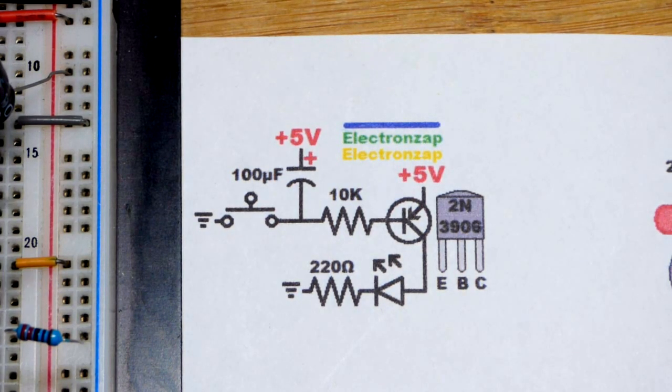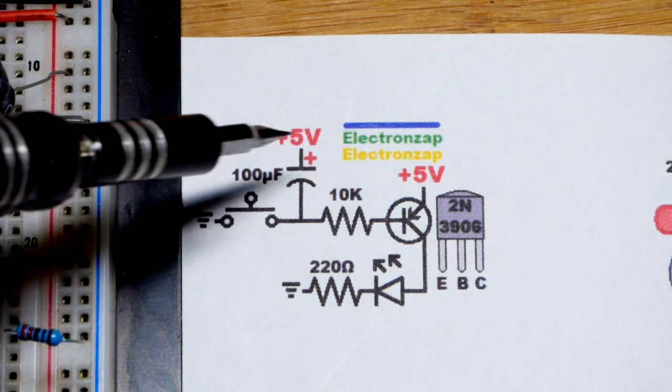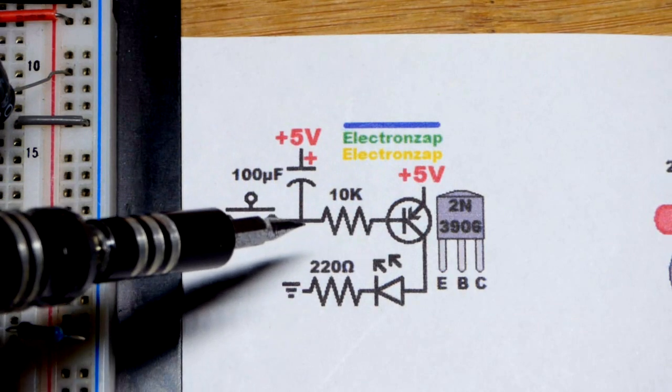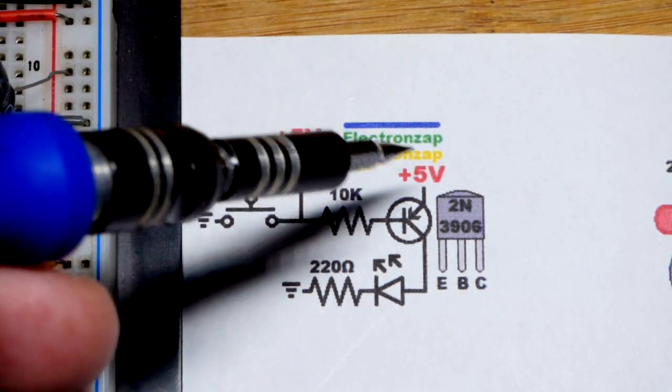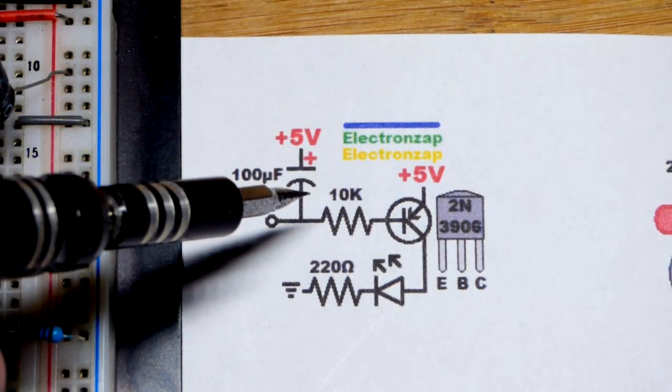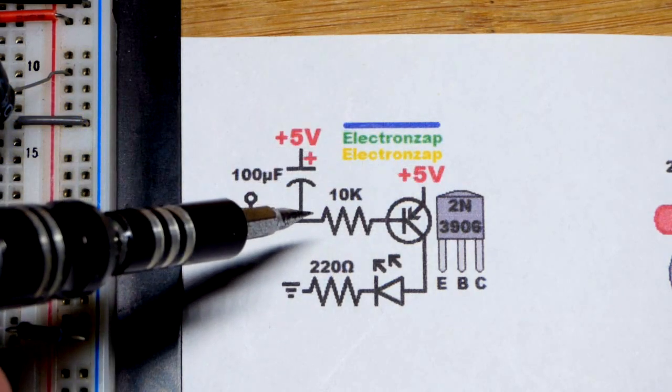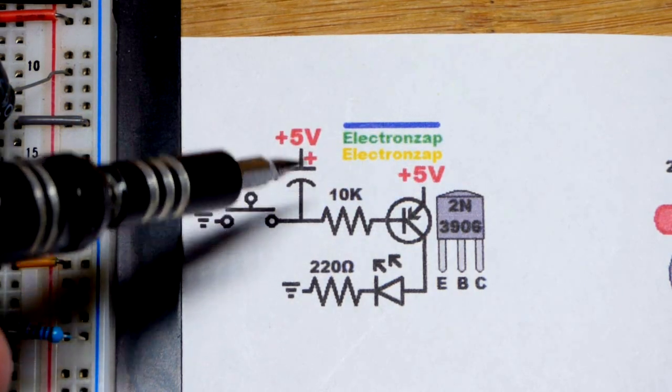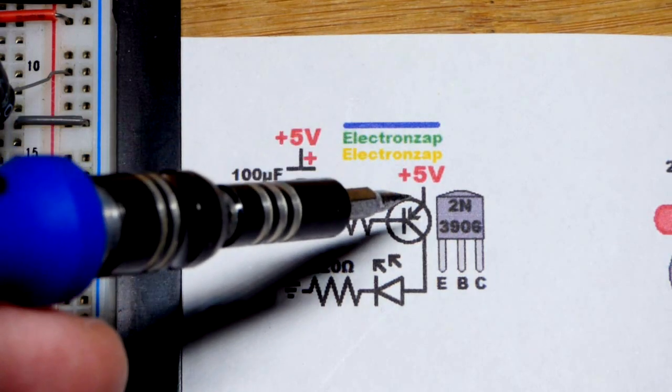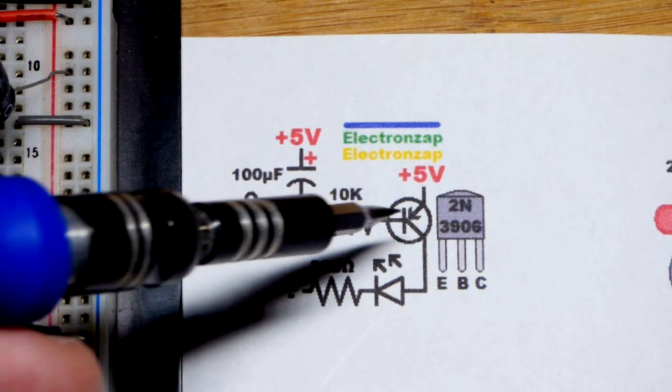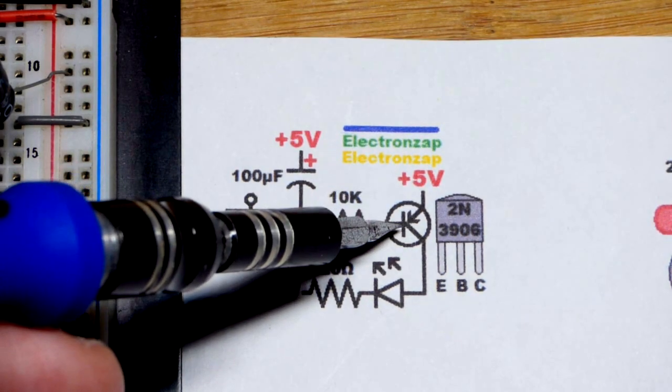When you release the switch, you can see that we have a path through the transistor. The capacitor starts discharging, so it keeps the current flowing. You start off with the initial voltage that you had, and the voltage drops as the capacitor discharges. At some point, you'll get a low enough current where the transistor does not conduct fully.